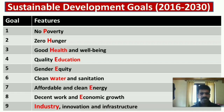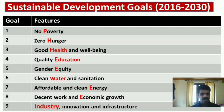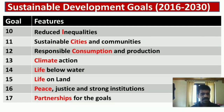In short, we have discussed the 17 goals of Sustainable Development Goals — the universal or global goals from 2016 to 2030, after the Millennium Development Goals. They are: No Poverty, Zero Hunger, Good Health and Wellbeing, Quality Education, Gender Equity, Clean Water and Sanitation, Affordable and Clean Energy, Decent Work and Economic Growth, Industry Innovation and Infrastructure, Reduced Inequalities, Sustainable Cities and Communities, Responsible Consumption and Production, Climate Action, Life Below Water, Life on Land, Peace Justice and Strong Institutions, and Partnerships for the Goals.